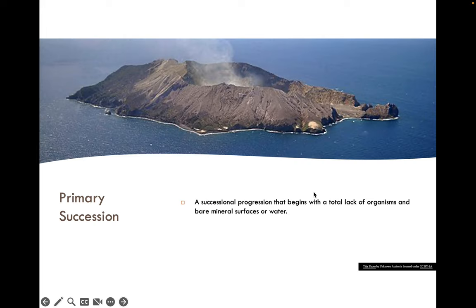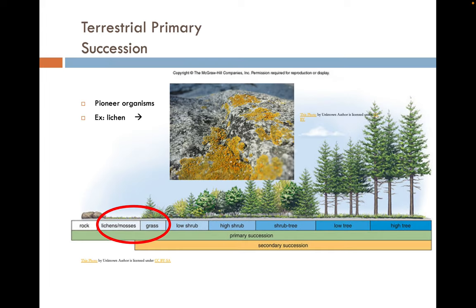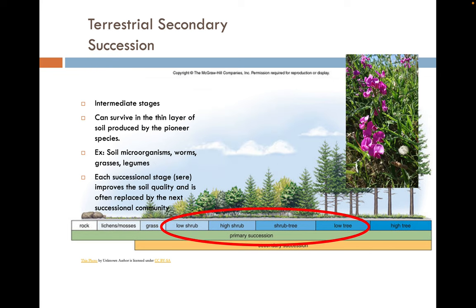Once there's some soil present, grasses can begin to grow. Once enough grasses have grown and died, they build up enough of an organic layer to support the growth of short, low shrubs. Then as those shrubs live and die and build up the soil even more, high shrubs can come in, then shrub trees, and eventually low trees. As those low trees die off, higher trees take over. Each successional stage improves the soil quality and is often replaced by the next community, moving in a linear progression through time.